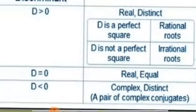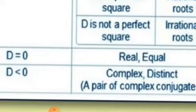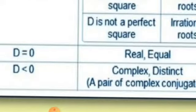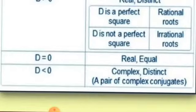If the discriminant equals zero, the roots are real and equal. If the discriminant is less than zero — meaning the answer is a negative value — the nature of the roots are complex and distinct.